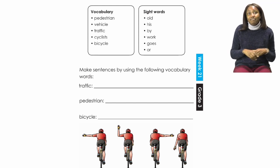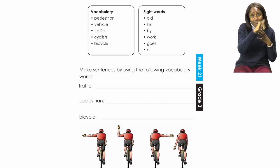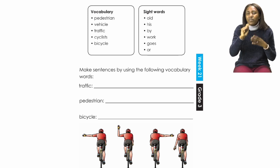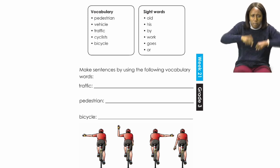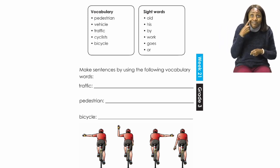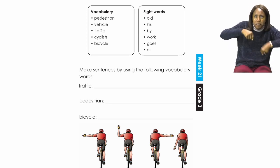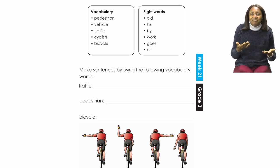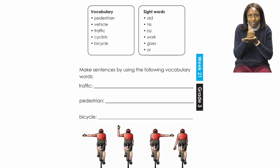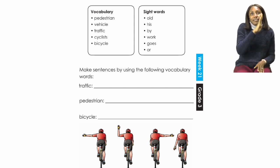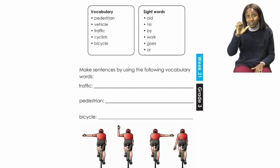Then we have cyclists — these are people who ride bicycles. As you can see, we have four pictures below showing someone who is riding a bicycle. We will explain these ones later on. The last word we have is bicycle, which is what we can see from the back in the pictures.